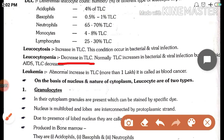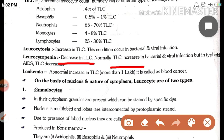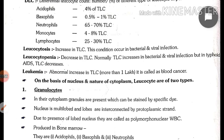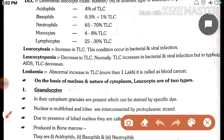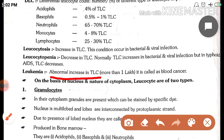Leukocytopenia means decrease in TLC. Normal TLC increases in bacterial and viral infection, but in typhoid and AIDS, TLC decreases. Agar typhoid hoga ya AIDS hoga, to us condition mein TLC decrease hogi — ise hum log leukocytopenia bolte hain. Leukemia kya hai? Abnormal case jab TLC more than one lakh ho jaaye, ise blood cancer kehte hain. Leukemia means blood cancer.